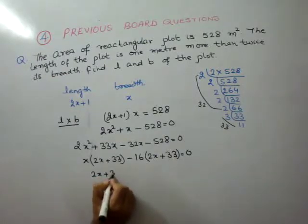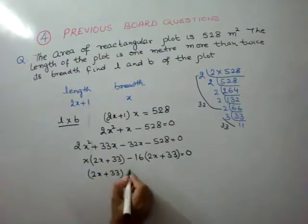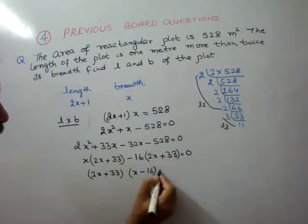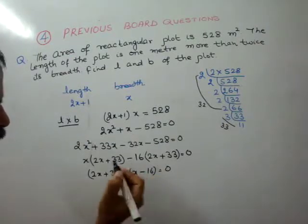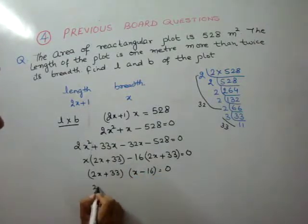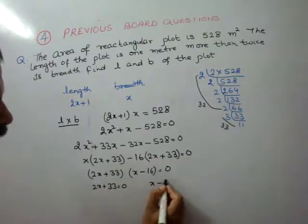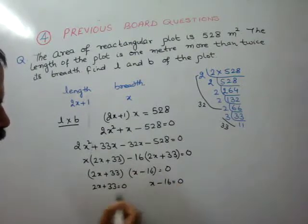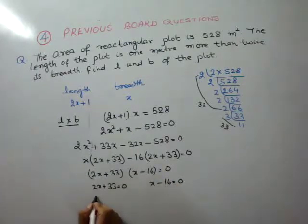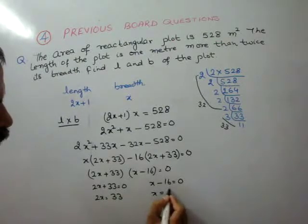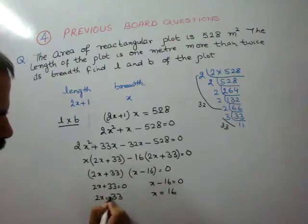So we get the factors: 2x plus 33, and x minus 16 is equal to 0. So either 2x plus 33 is equal to 0, giving 2x equal to 33, or x minus 16 is equal to 0, giving x equal to 16.